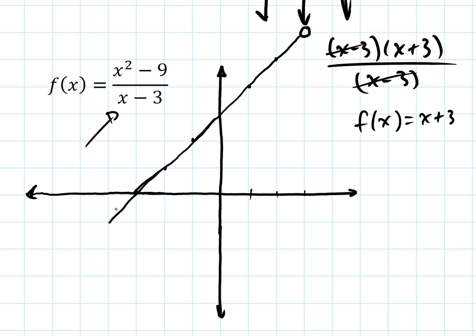Anyways, bottom line is just make sure that you include this information about this function actually being discontinuous at that point. There's a small hole there, and the holes always show up because of division by 0. So it's just a matter of looking at your places in your denominator.